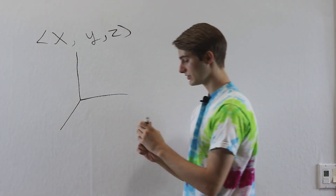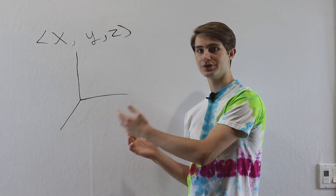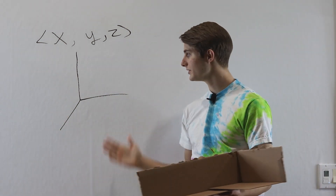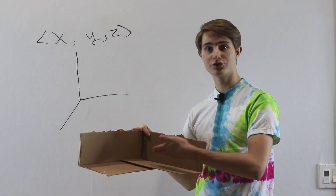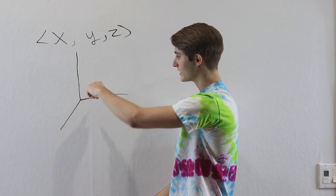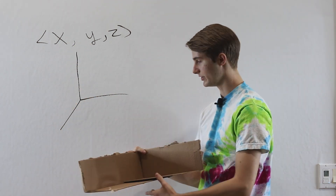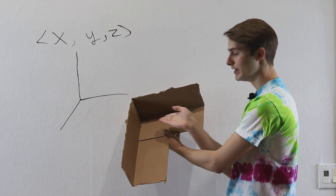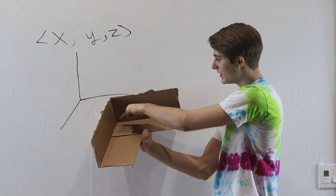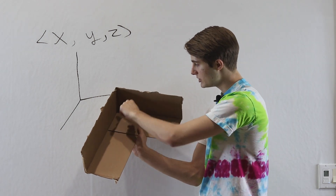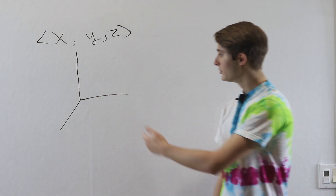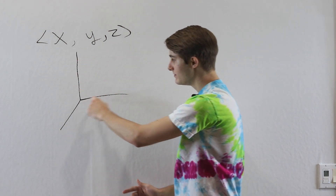I'm going to introduce a third axis. Since we're drawing on a two-dimensional surface, we can't have a third axis pointing out of the board — instead, we're going to look at this 2D drawing as a sort of three-dimensional corner. We have two dimensions like this, and one dimension pointing outwards as our third dimension. We can see how that relates to a corner in actual three dimensions — a vertical axis going upward, a horizontal axis going out, and the third dimension perpendicular to that horizontal axis.